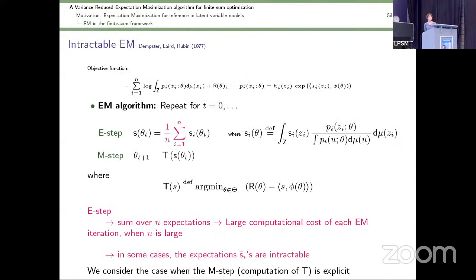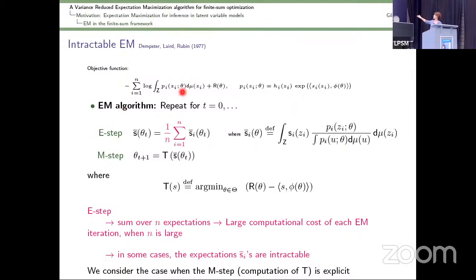A solution proposed about 40 years ago to solve this kind of optimization problem in computational statistics is EM — expectation maximization. It is an iterative algorithm which defines a sequence of points theta_t. Each iteration combines two steps: the first is called the E step for expectation step, and the second is the M step for maximization step — in our formalism, a minimization step. In the finite sum setting, the expectation step necessitates the computation of a sum.